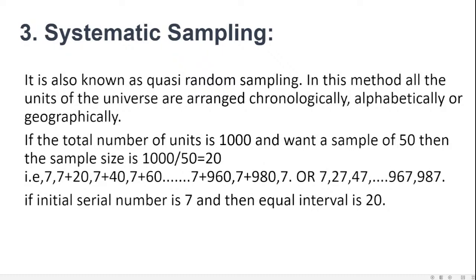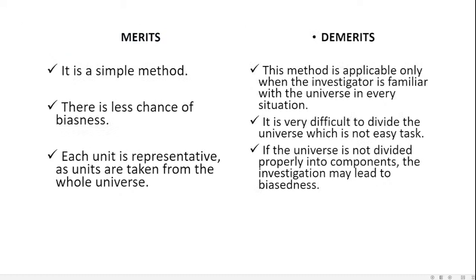Under systematic sampling there are merits and demerits. It is a very simple and easy-to-understand method. There is less chance of biasedness because units are arranged chronologically or alphabetically. Each unit is representative as units are taken from the whole universe.